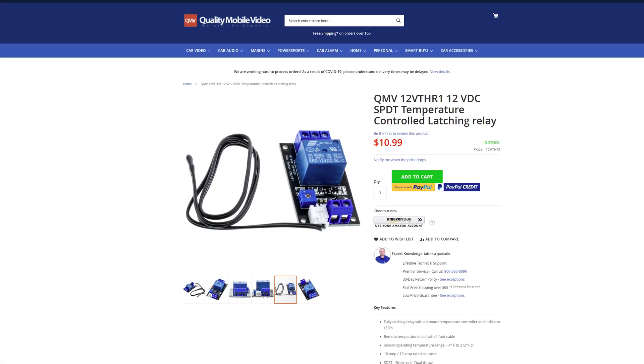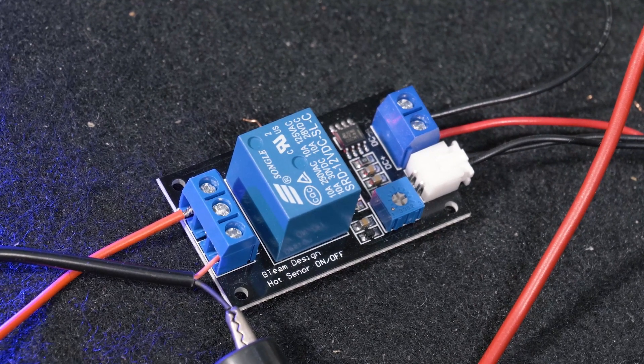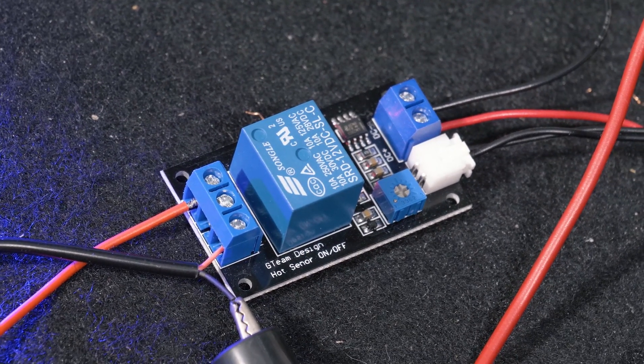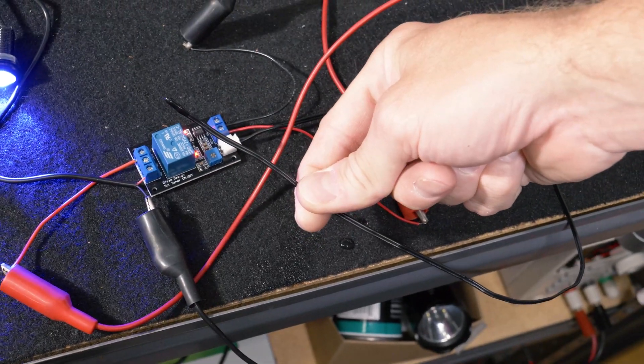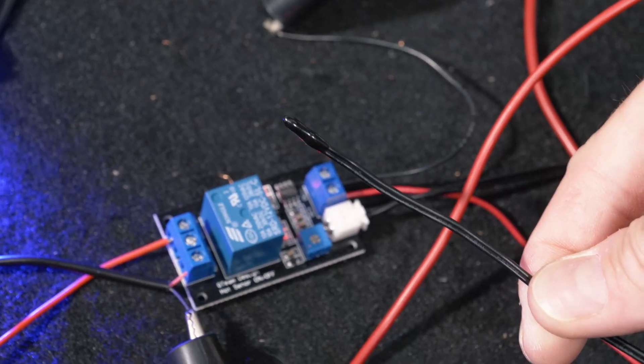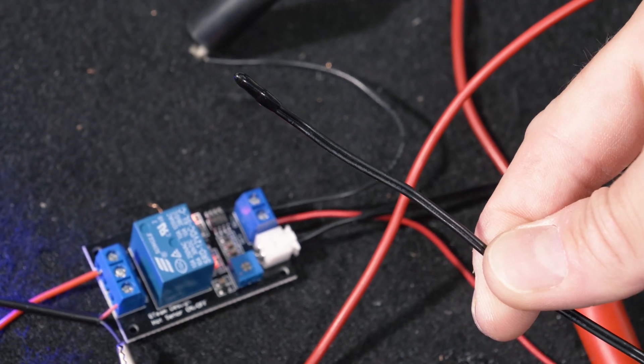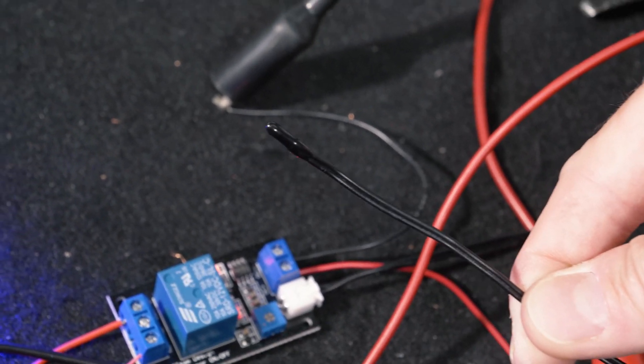This relay has the ability to control a 10 to 15 amp load using a normally open or normally closed contact relay. It has an 18 inch remote temperature sensor with an operating temperature of minus four degrees Fahrenheit to 212 degrees Fahrenheit.